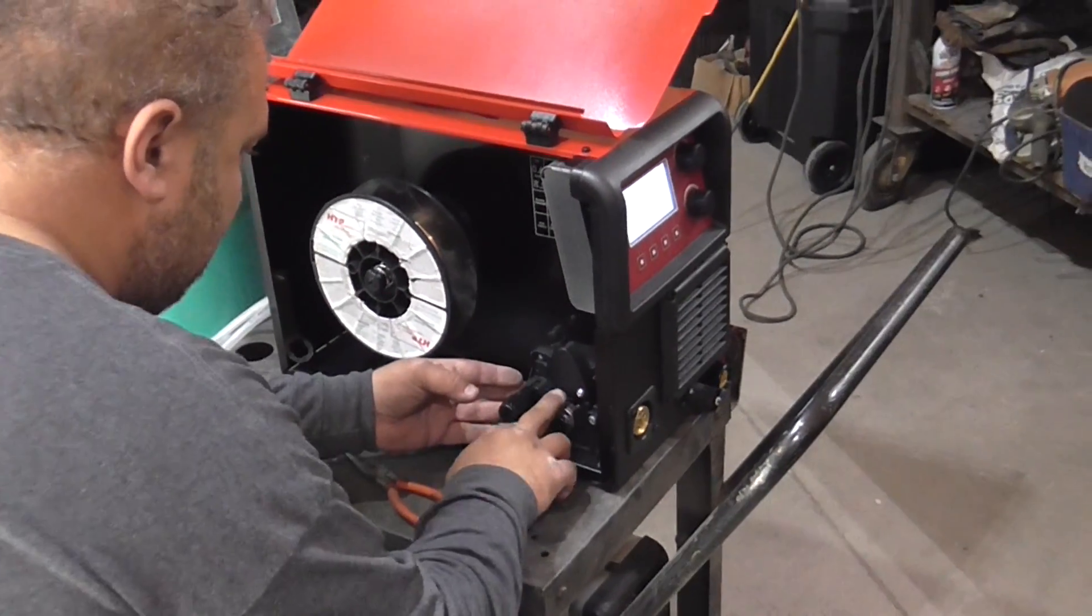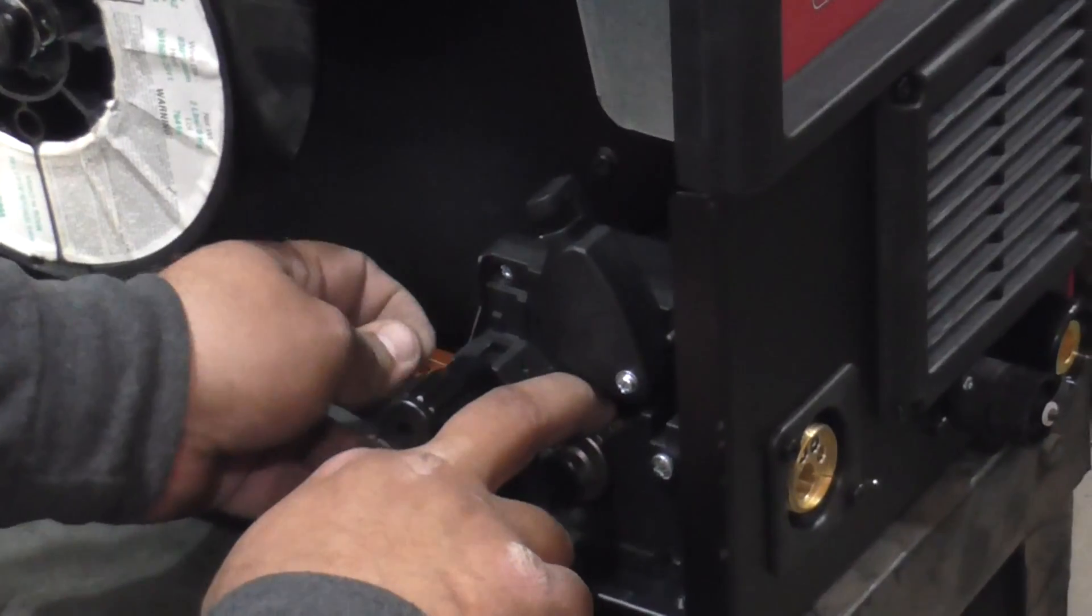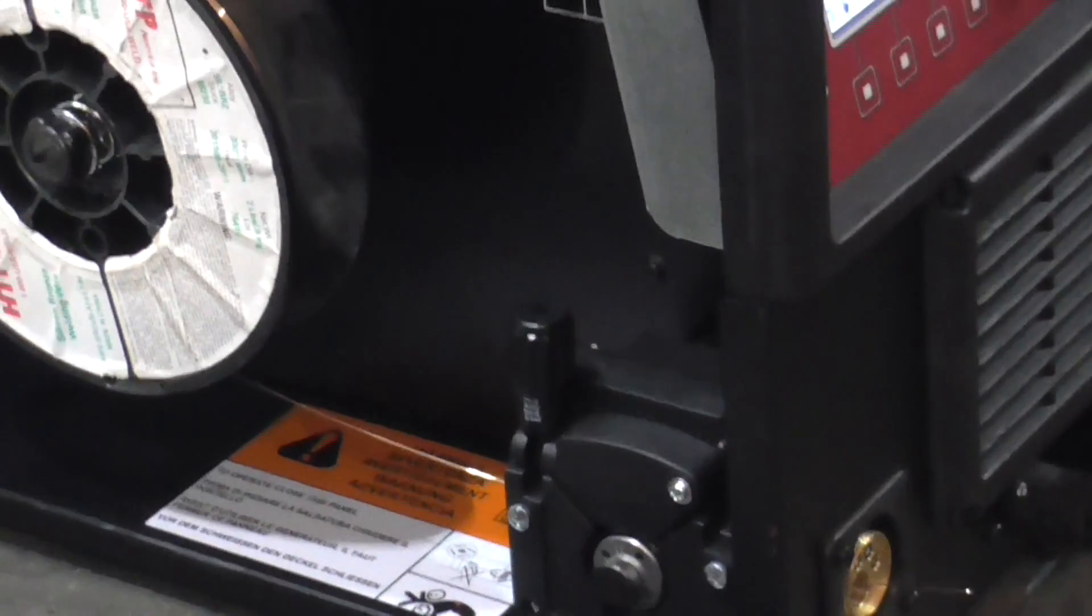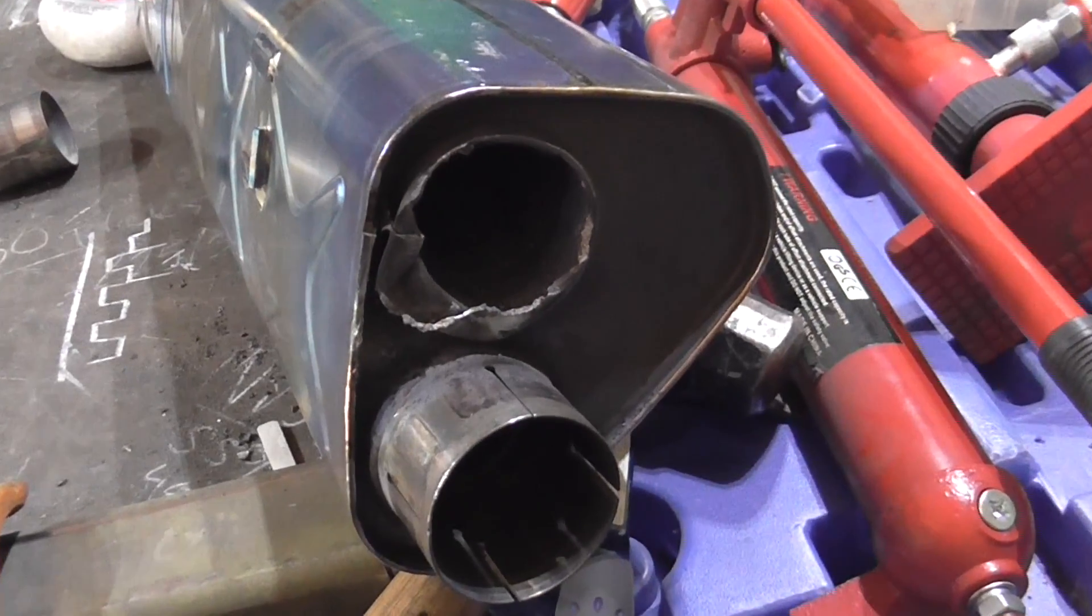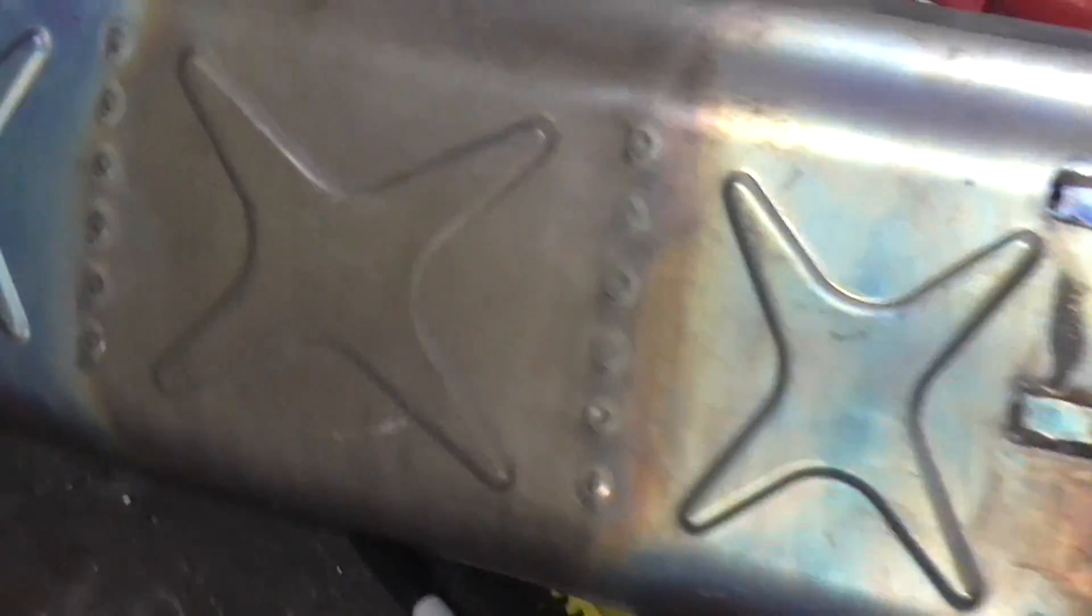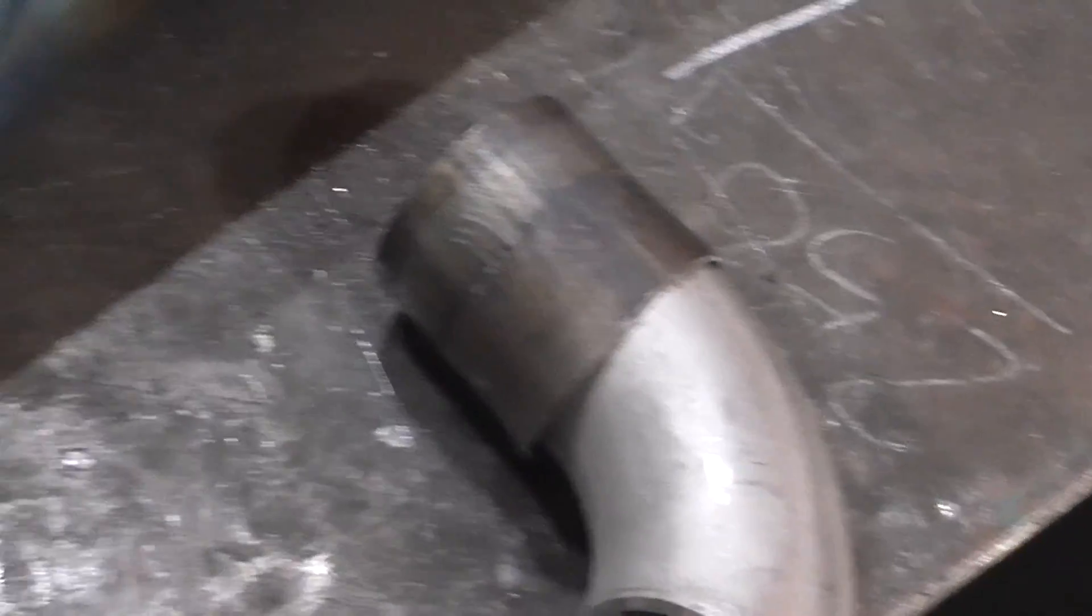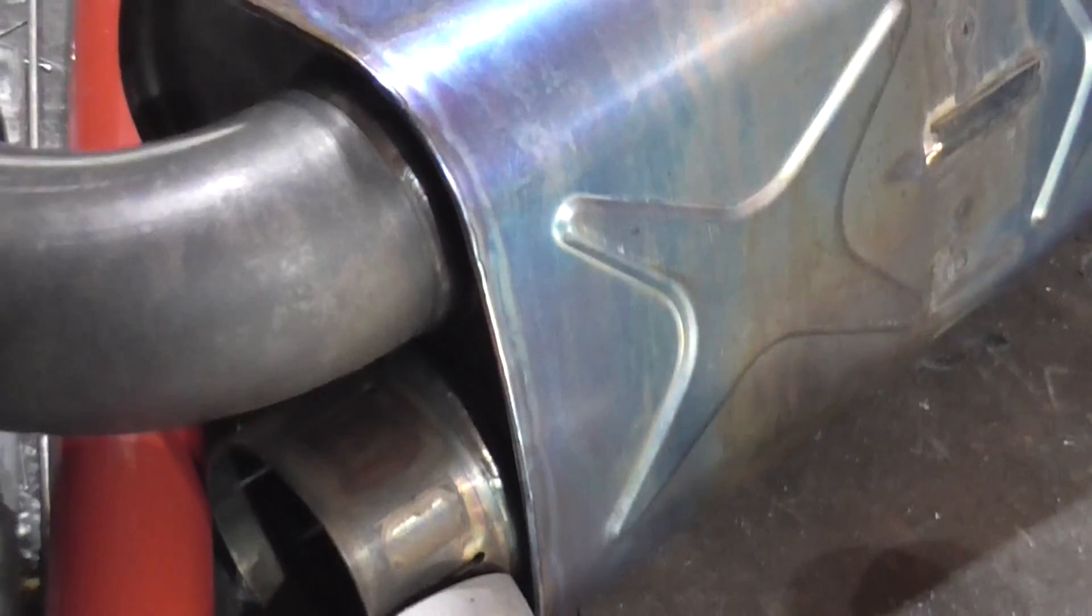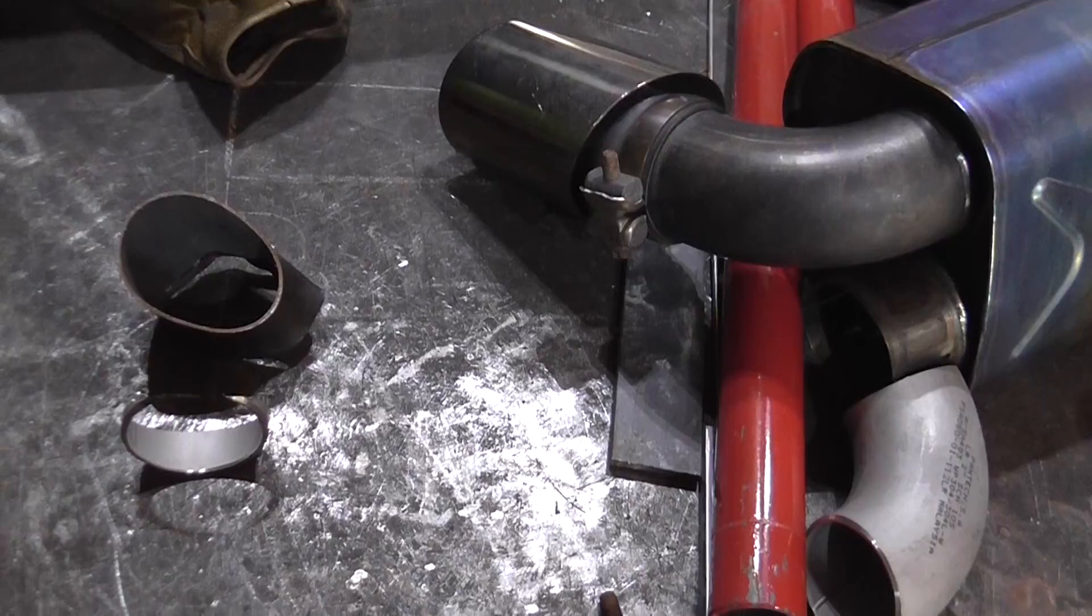Today we're trying something special. We're loading 0.030, 0.8 millimeter silicone bronze wire into the Propulse 200 and putting straight argon gas on it with really long post-flow and pre-flow times. We're trying to pulse weld and braze on this Akrapovic titanium exhaust to see how this turns out.